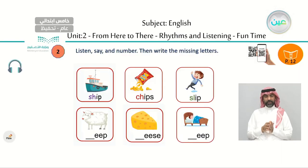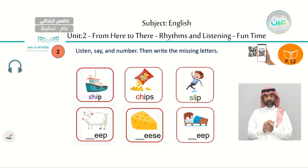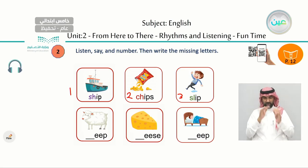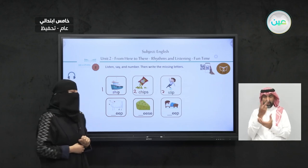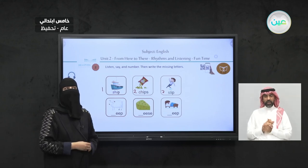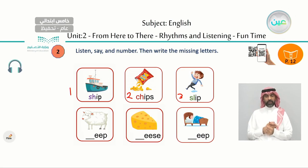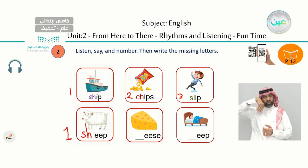Now we have this exercise. I want you to listen and say after me — number one, two, or three — then write the missing letters. Number one is for the sh sound, number two for ch sound, number three for sl sound. Here we have three pictures, three words with missing letters. Number one — sheep. Sheep. Repeat after me: sheep. Sound number one. Give me the letters — S and H. Excellent! S-H says sh, sheep.